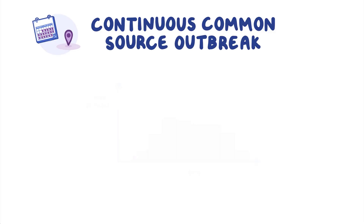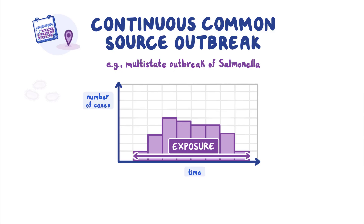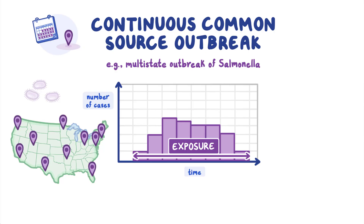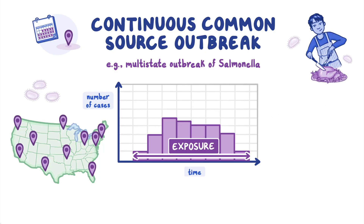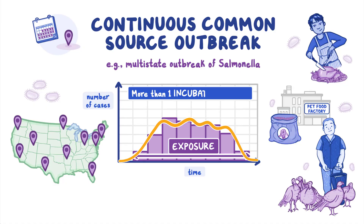When the exposure lasts longer than a single point in time, it can cause a continuous common source outbreak. A single source of the infectious agent is involved, but exposure takes place over a longer period, so cases are spread out over time. For example, a multi-state outbreak of salmonella infections linked to raw turkey involved people exposed through eating turkey products, preparing raw turkey pet food, or contact with live turkeys. This suggested widespread contamination across the production chain, resulting in cases occurring over a longer period. The epi curve for a continuous common source outbreak usually presents as a long, bumpy plateau lasting more than one incubation period, starting with the shortest incubation after the first exposure and ending after the longest incubation for the last exposure.